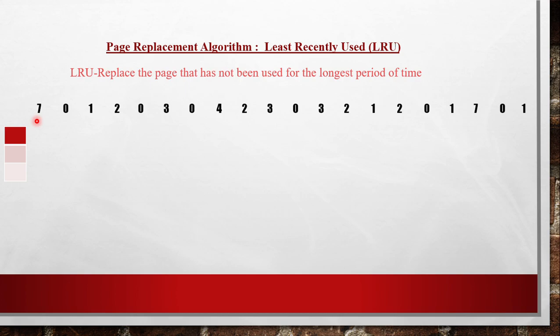To remove that fault, we have to bring page 7 from virtual memory to main memory. When we bring the page from virtual memory to main memory, we keep the page in a free location of main memory. A free location is called a frame. We can see here frame 1, frame 2, and frame 3 available for the particular process we are going to execute. We have assumed that 3 frames are available in main memory to accommodate that particular process.